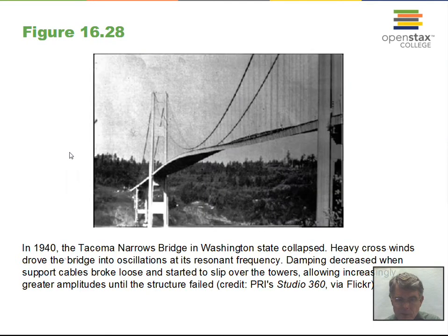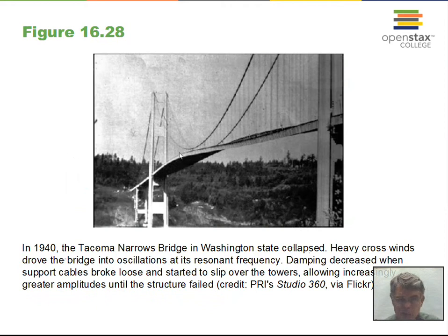You can watch the Tacoma Narrows Bridge on YouTube. Built in the 1940s, it collapsed due to wind creating a resonance situation with the bridge, causing it to oscillate with growing amplitude until the steel girders cracked. No one was killed, but it was a significant loss for those who needed to cross Tacoma Narrows.